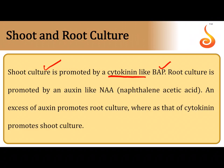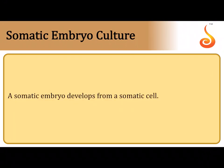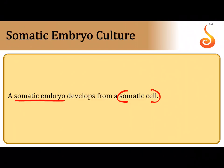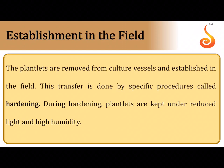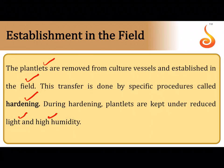Root culture is promoted by treating culture medium with auxin. Somatic embryos develop from individual somatic cells because each plant cell is totipotent — capable of developing into an entire plant. Once plantlets are obtained from tissue culture, they are not directly transplanted to the field; instead, they undergo hardening — slow exposure to natural conditions in sterile soil, reduced light, and high humidity in nurseries — before being planted in natural soil.